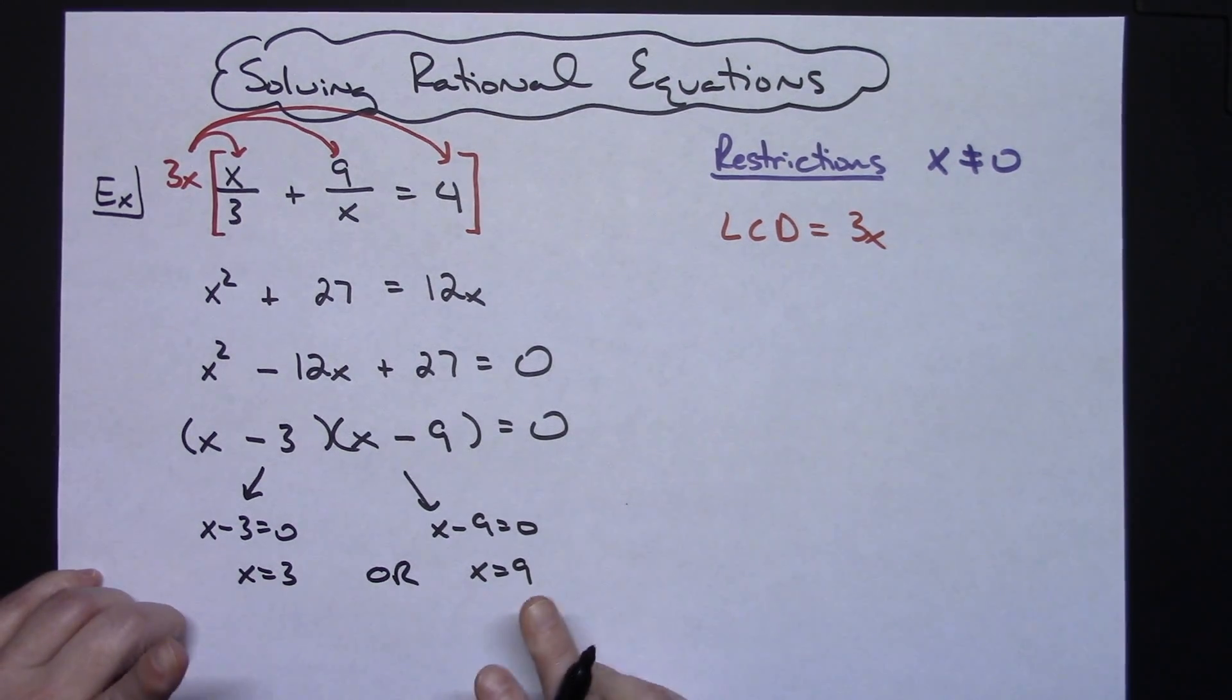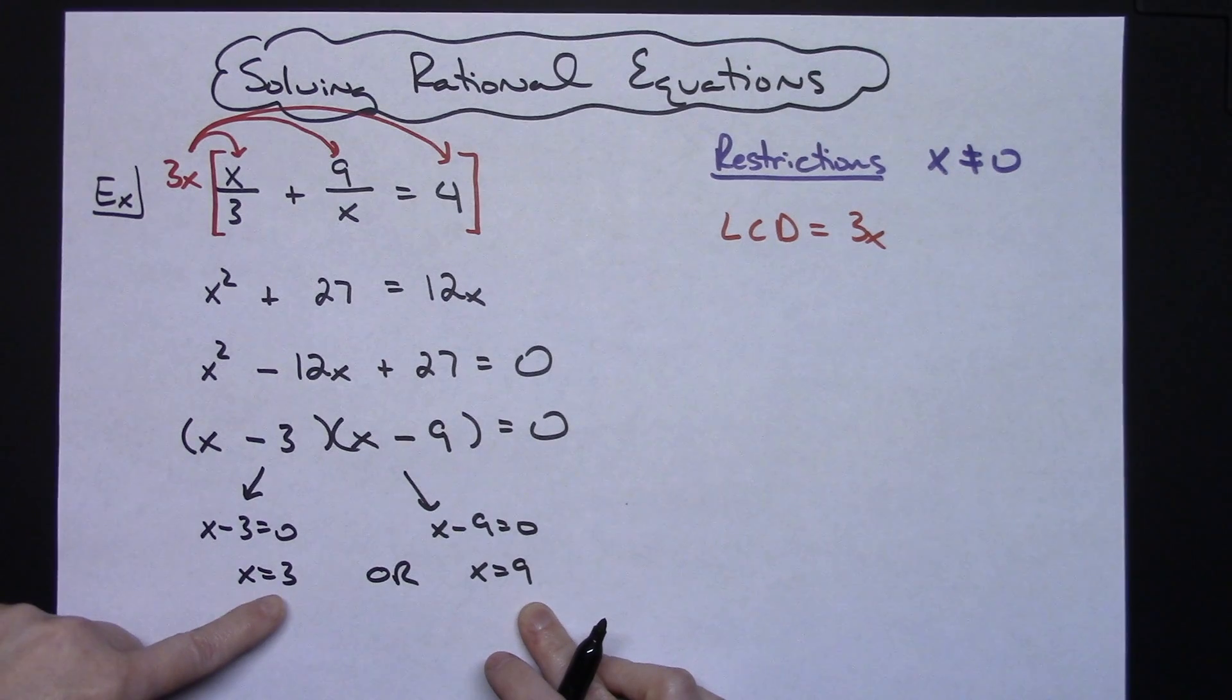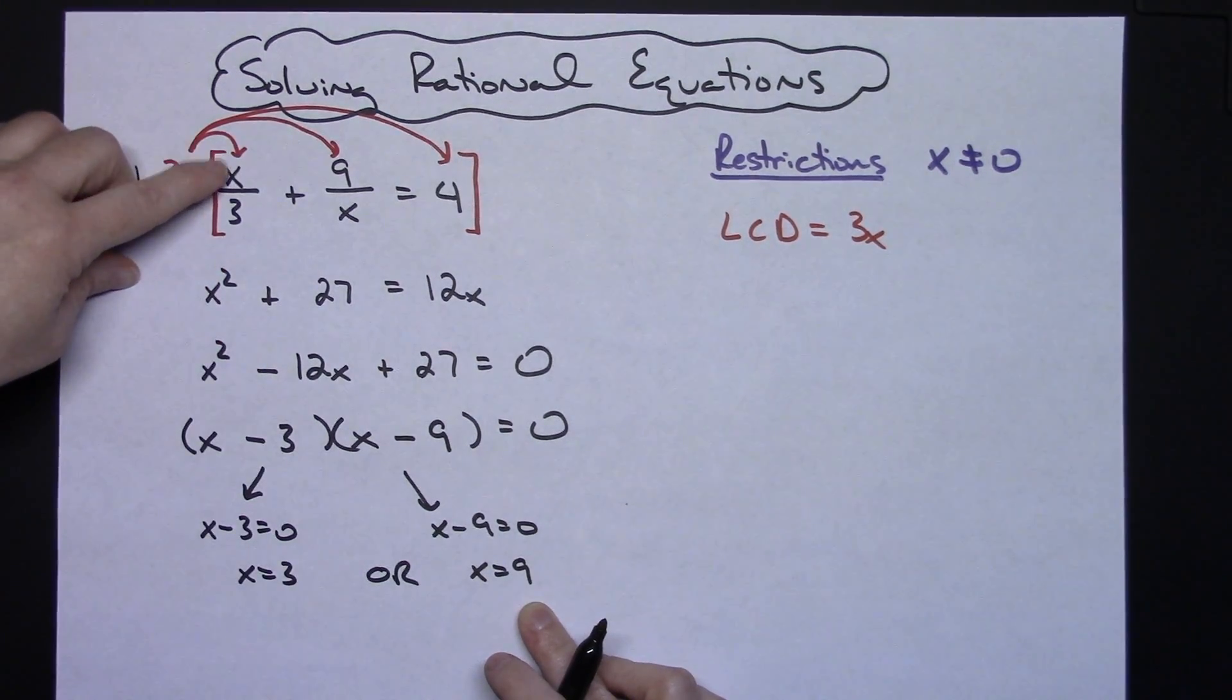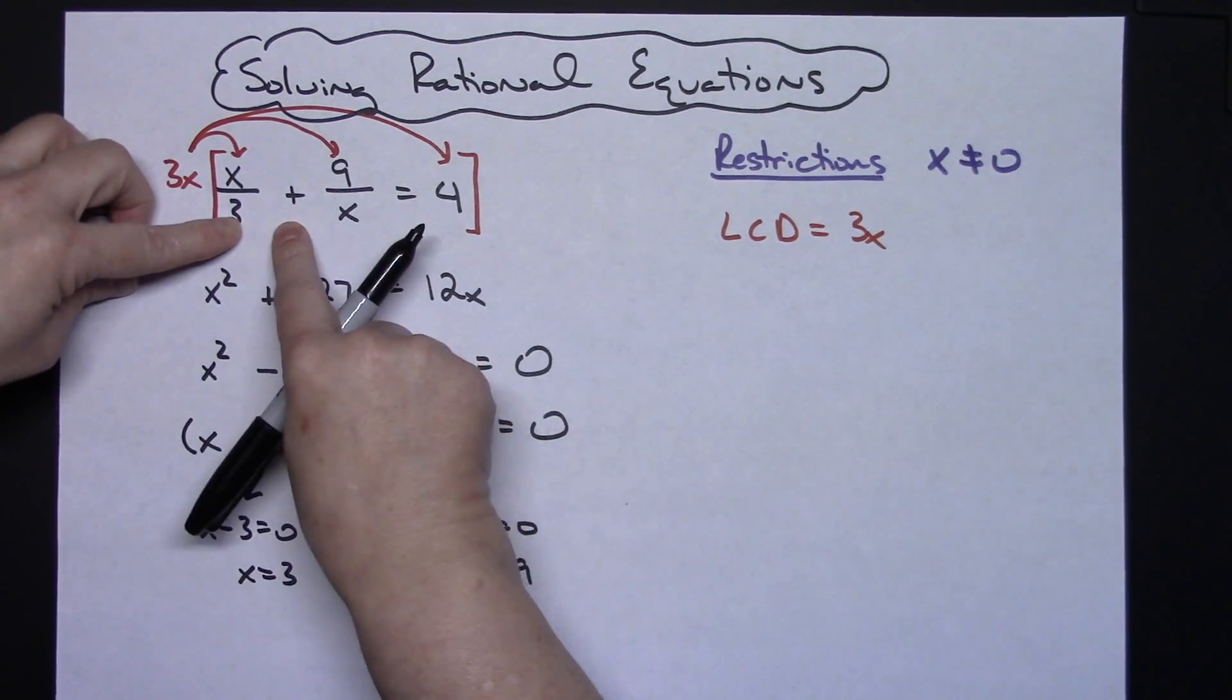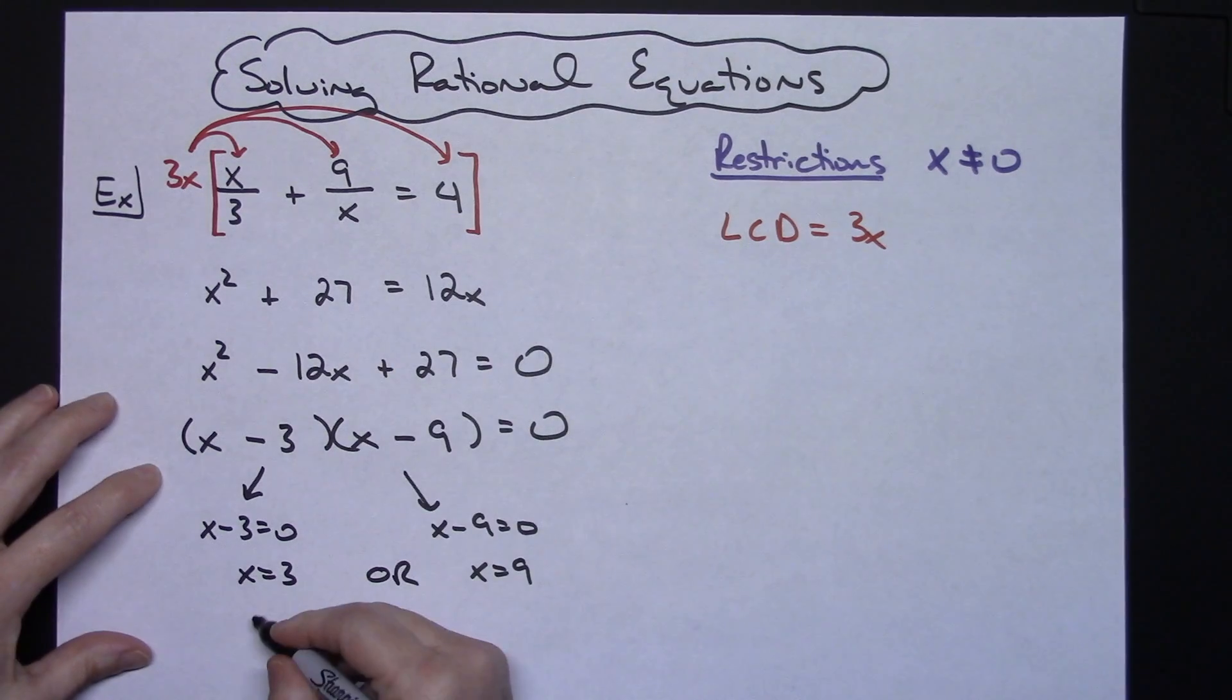Now at this point you do need to take both of these answers and plug them back in to make sure that you have a true statement. Most of the time you can do that in your head as long as it's a simple equation. X equals three. If I plug it in here it's going to give me one plus nine divided by three is three. So one plus three does equal four. So this one checks.